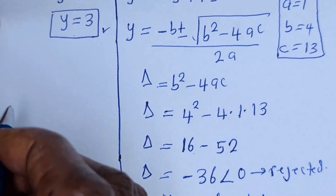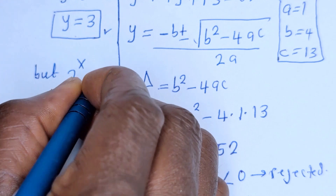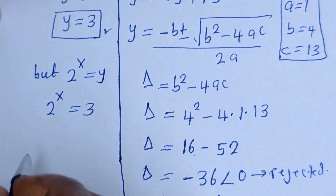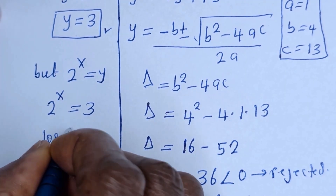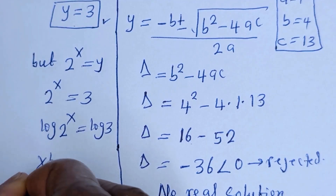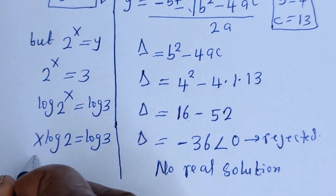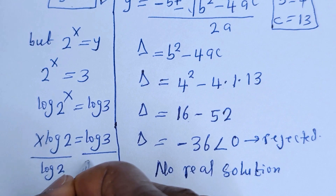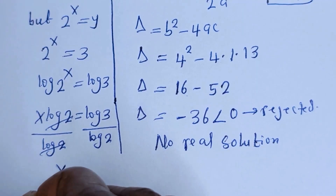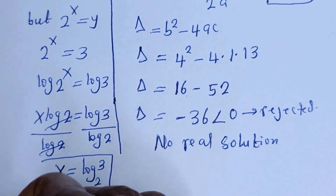Recall that 2 raised to power x is equal to y. Now 2 raised to power x is equal to 3. Let us take the log on both sides: log of 2 raised to power x equals log 3. Then x times log 2 equals log 3. Dividing both sides by log 2, x equals log 3 over log 2, which is log 3 base 2. This is the final answer for x.